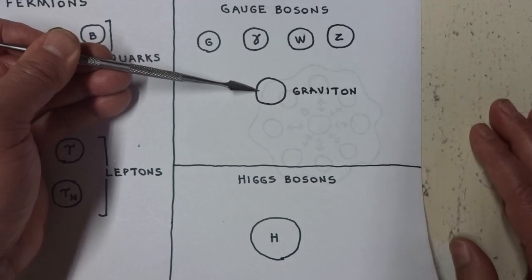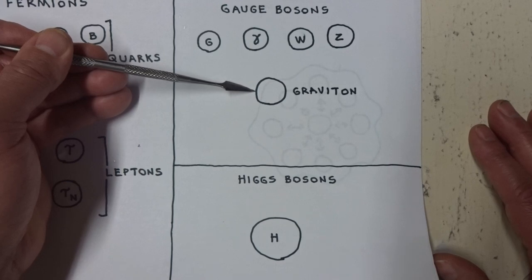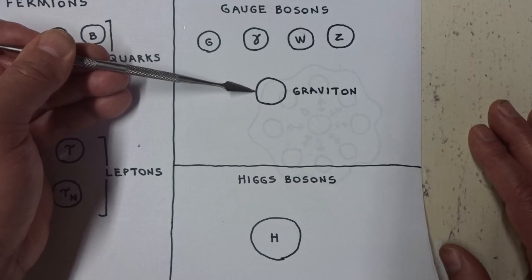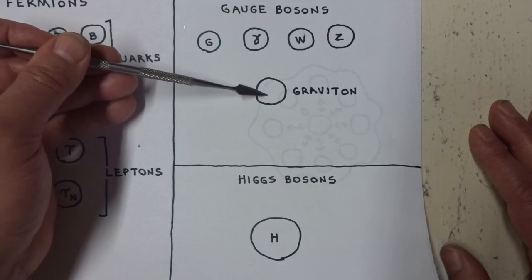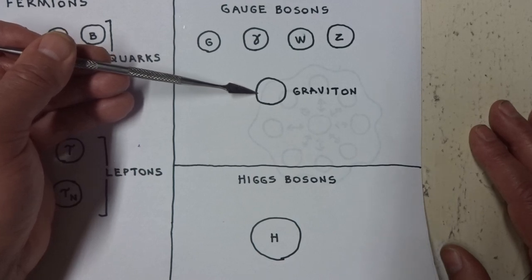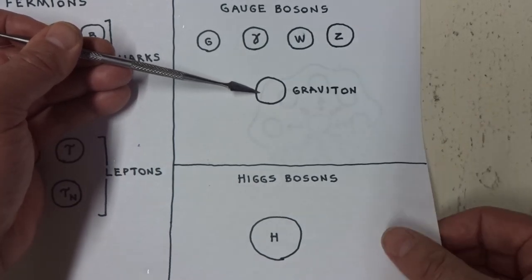The graviton is theoretical because it has never been observed. In order to observe the graviton, we would need a particle accelerator much larger than Fermilab. We would need a particle accelerator the size of the orbiting planet of Jupiter around the Earth. What I mean to say is the orbit of Jupiter, that circumference would have to be the circumference of the particle accelerator in order to have enough energy to smash subatomic particles together to observe the graviton.